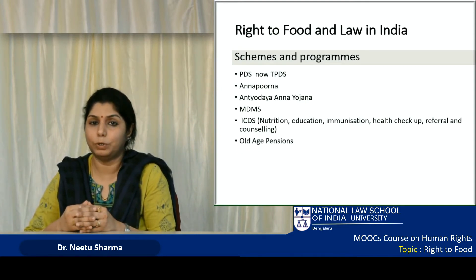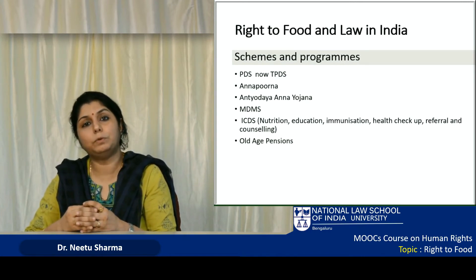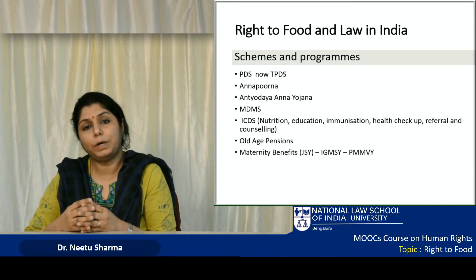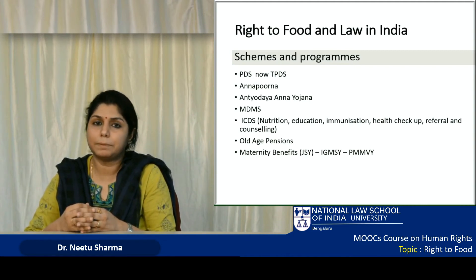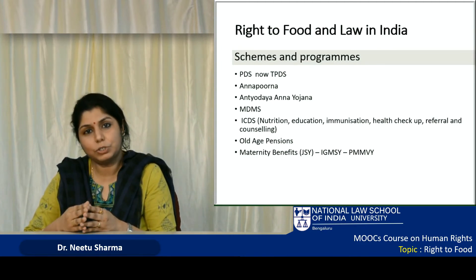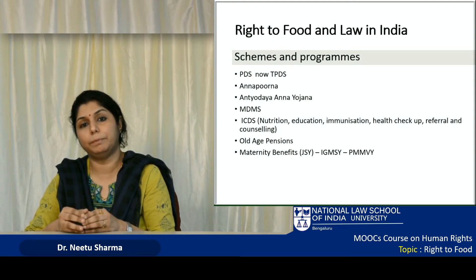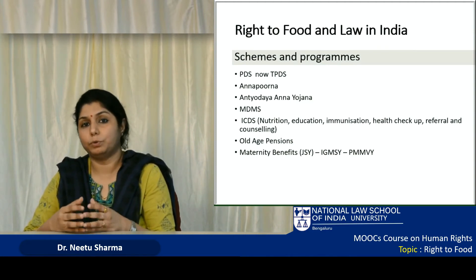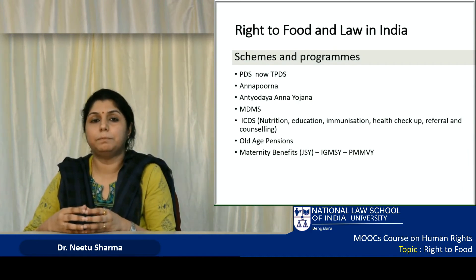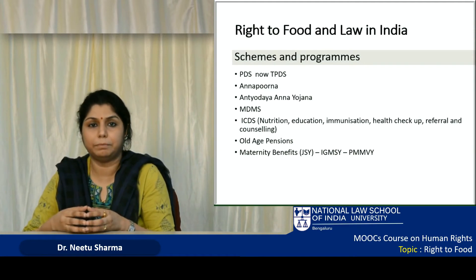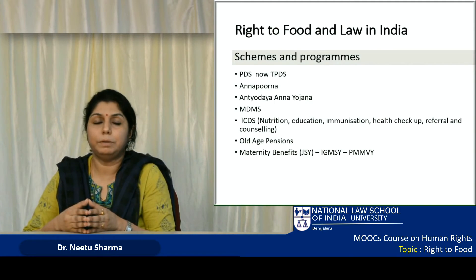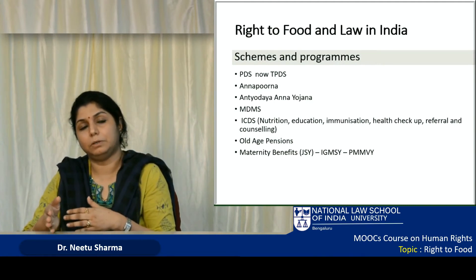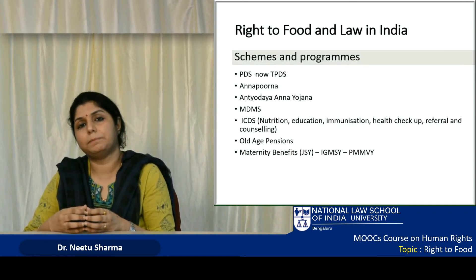Apart from that, there are two more relevant schemes: the old age pension providing social security to people who are old and unable to earn their living, and maternity entitlement schemes. These have been known by different names in different states. Janani Suraksha Yojana provided cash to women in the case of institutional deliveries. Indira Gandhi Matritva Sahayog Yojana was started as a pilot project in a few districts providing cash entitlements. The latest being Pradhan Mantri Matritva Vandana Yojana, through which cash entitlement of rupees 4,000 to 5,000 is provided to pregnant women at the time of delivery or in installments.